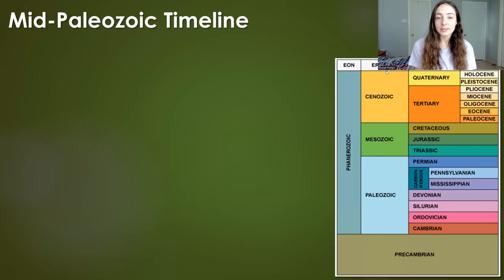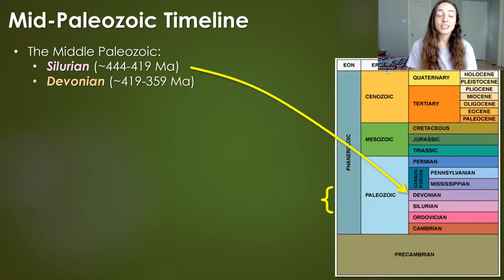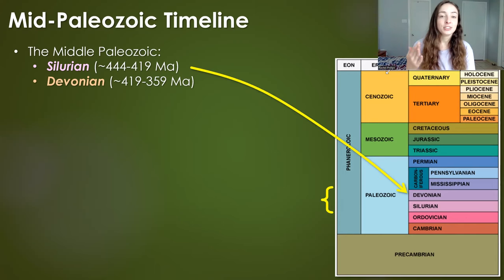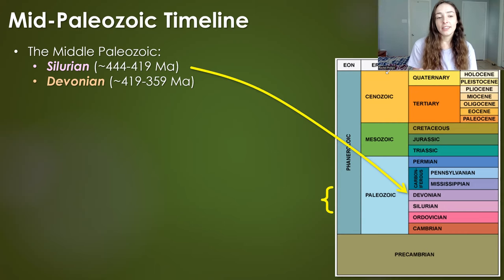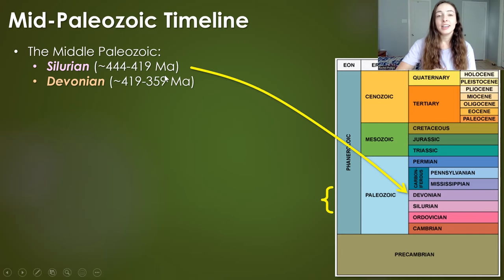So when exactly was the Middle Paleozoic era? The Middle Paleozoic includes the Silurian and Devonian periods, as shown here on this timescale. These periods occur just after the Early Paleozoic, which ends with the Ordovician period around 444 million years ago, and then go all the way until around 359 million years ago at the end of the Devonian, when the Late Paleozoic starts.